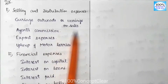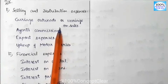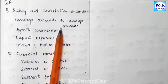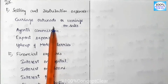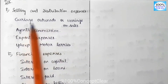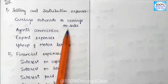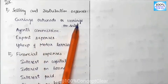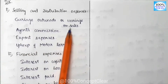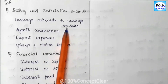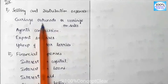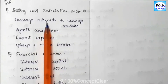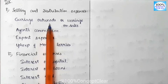There is also Carriage Outwards, or Carriage on Sales. When we sell the product to the customer and transport it from our office to the customer, we incur transport expenses — that is Carriage Outwards or Carriage on Sales. In the trading account we have Carriage Inwards and Carriage on Purchases; here in the P&L account it is Carriage Outwards.